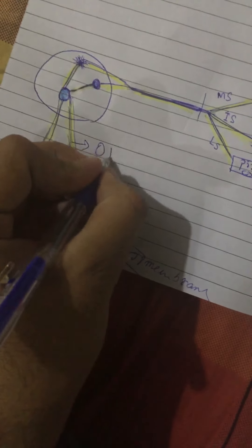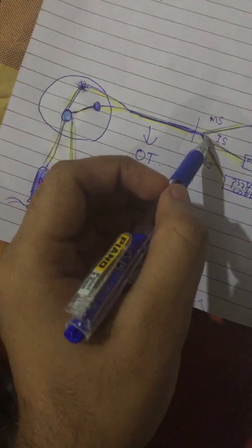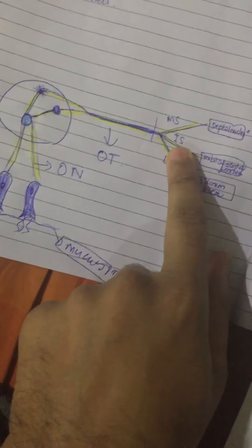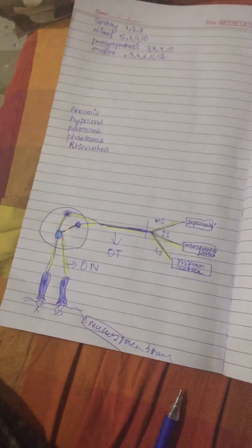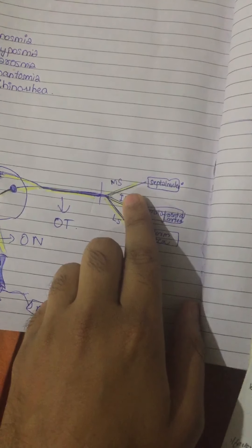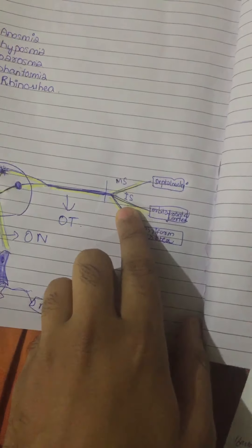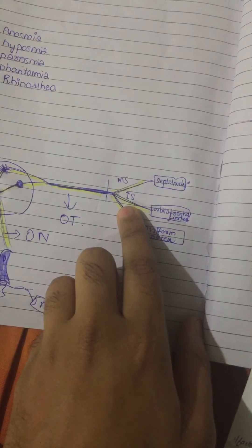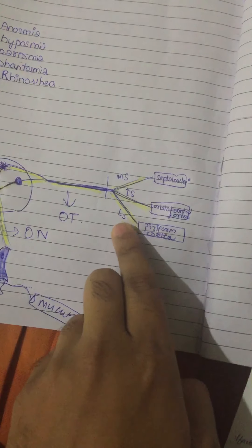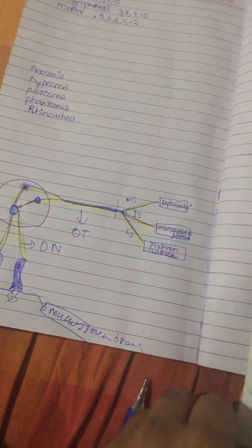After forming the olfactory tract, it moves on and divides into three striae: the medial stria, the intermediate stria, and the lateral stria. The medial stria goes to the opposite olfactory bulb through the anterior commissure and the septal nuclei. The intermediate stria goes to the orbitofrontal cortex, and the lateral stria goes to the piriform cortex.